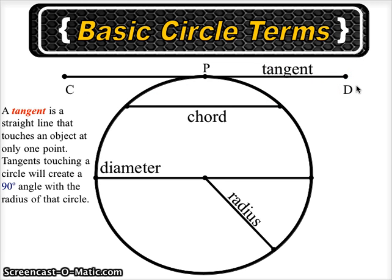A tangent is a straight line that touches an object at only one point. Tangents touching a circle will create a 90-degree angle with the radius of that circle.